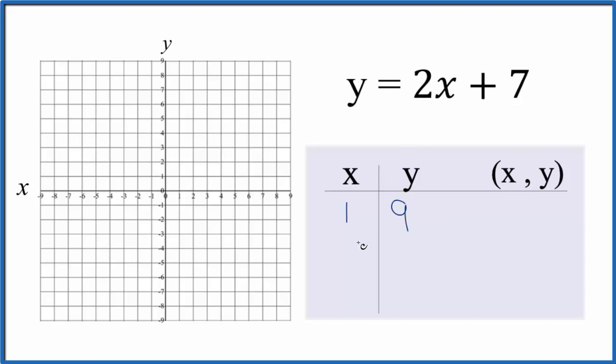We could also put 0, that's always a good one. 2 times 0, that's 0, so 0 plus 7 is just 7. How about negative 1? 2 times negative 1, that's negative 2 plus 7, we get 5.